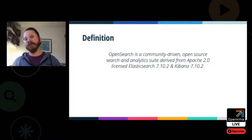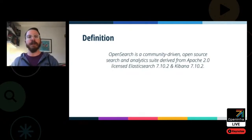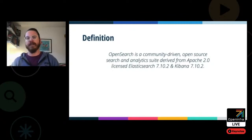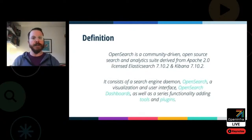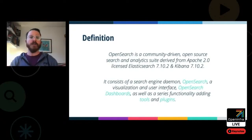OpenSearch is a community-driven search and analytics suite, derived from the Apache 2-licensed Elasticsearch 7.10.2 and Kibana 7.10.2. It consists of a search engine daemon called OpenSearch, which is analogous to Elasticsearch, a visualization and user interface called OpenSearch Dashboards, which is analogous to Kibana, as well as functionality-adding tools and plugins.